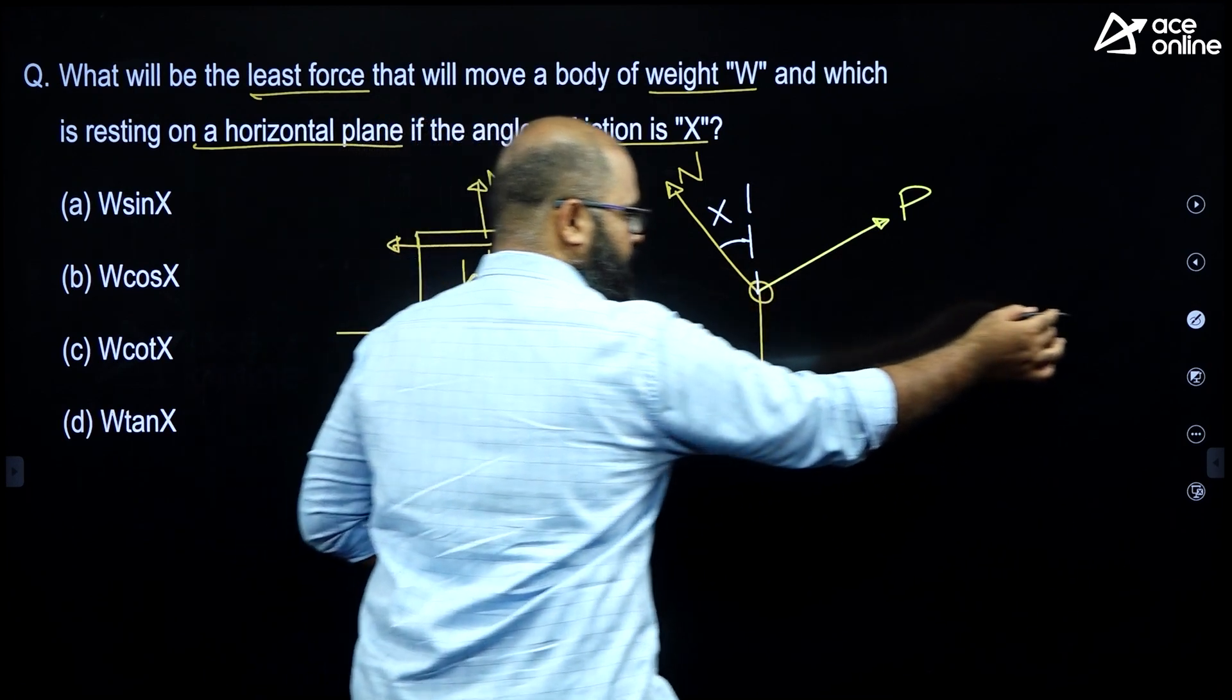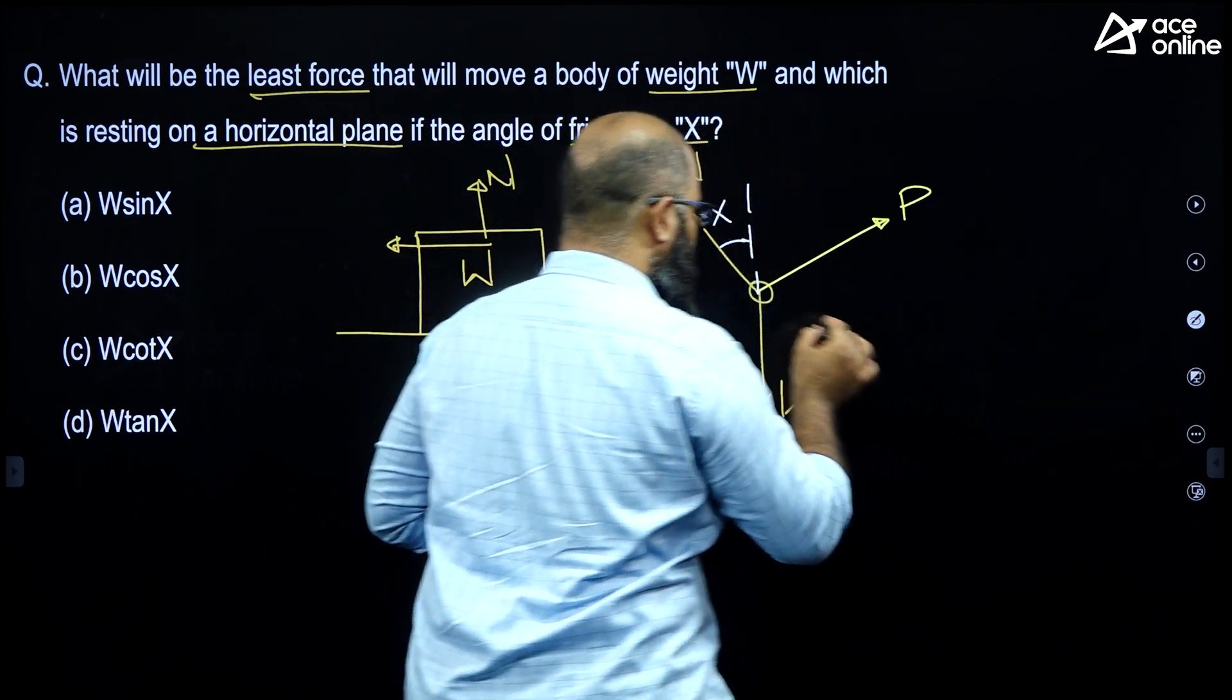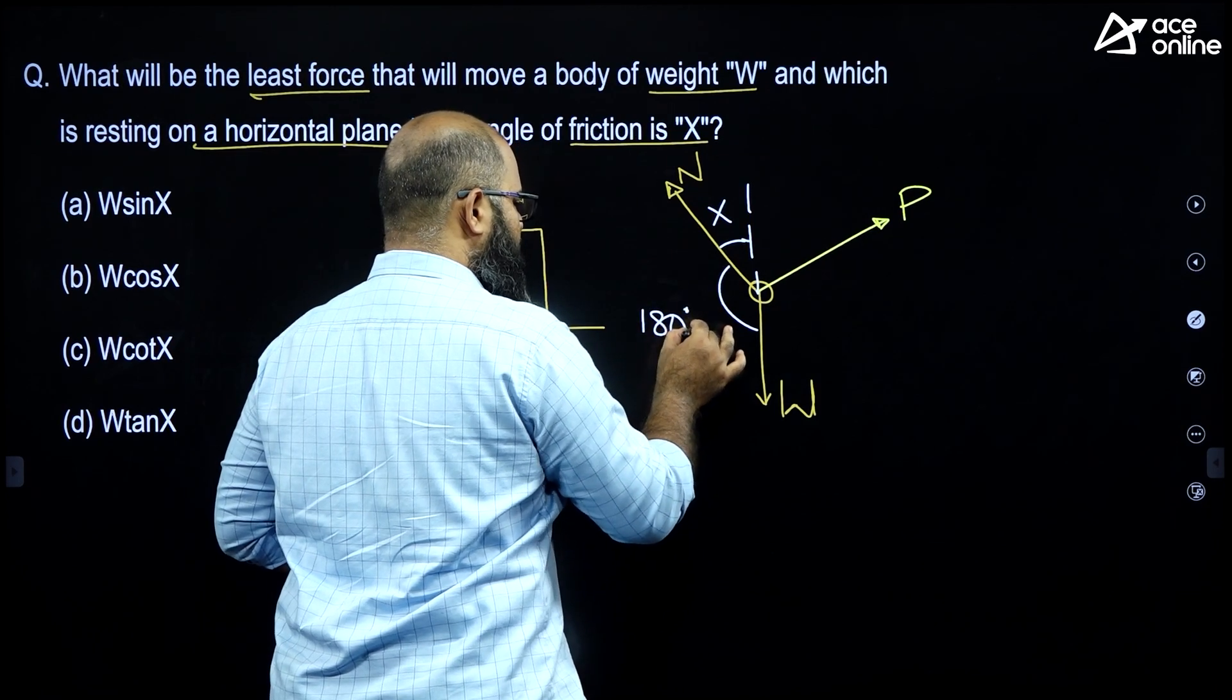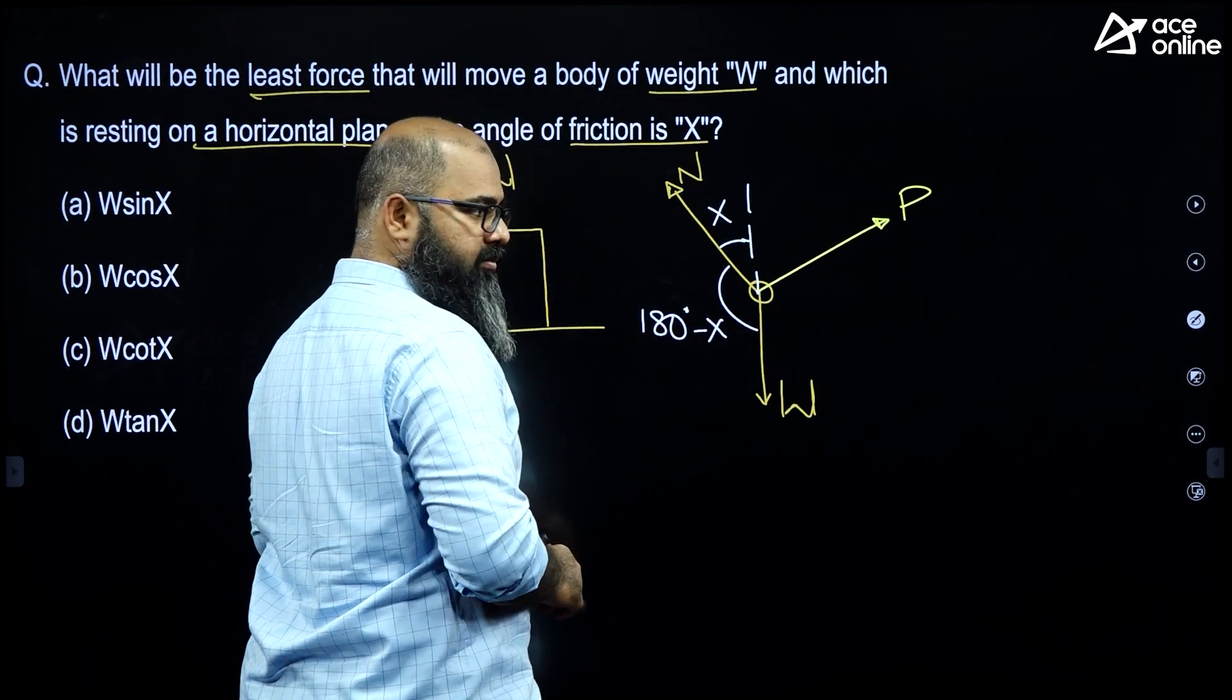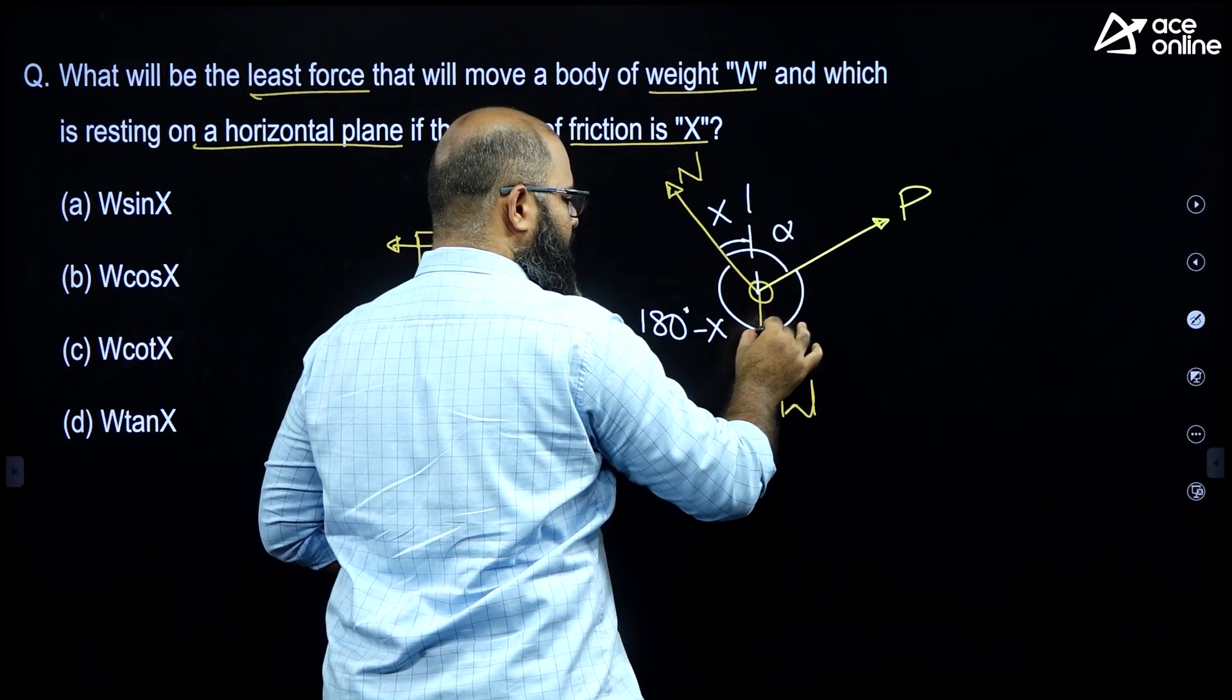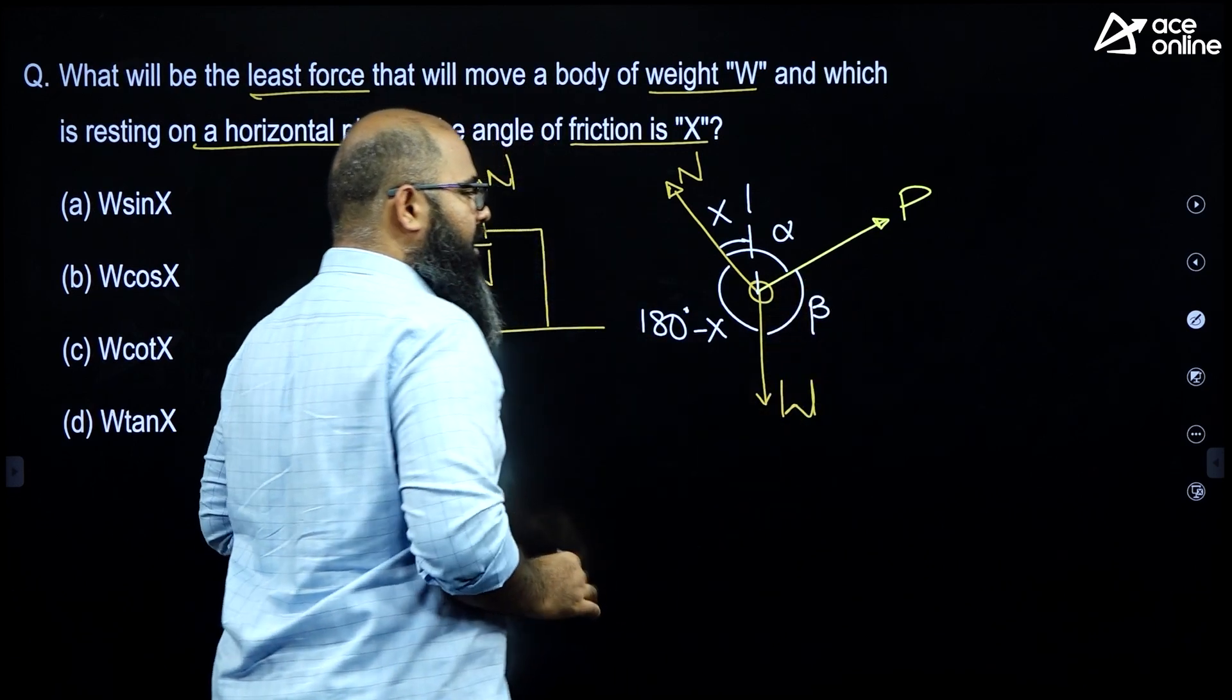Now, look at these angles over here. The other angles we are having are this angle is equal to 180 degrees minus X. Now, this is some angle, let us say alpha. This is some angle, let us say beta.